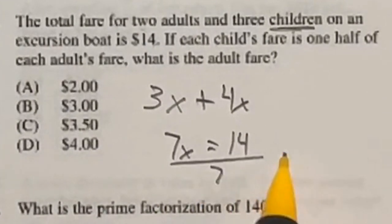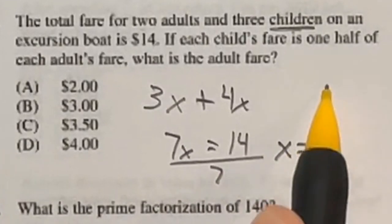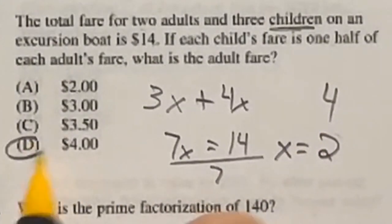If I divide both sides by seven, that gives me X equals $2. That's a child's ticket. So an adult would be double that, which would be $4, which is answer D.